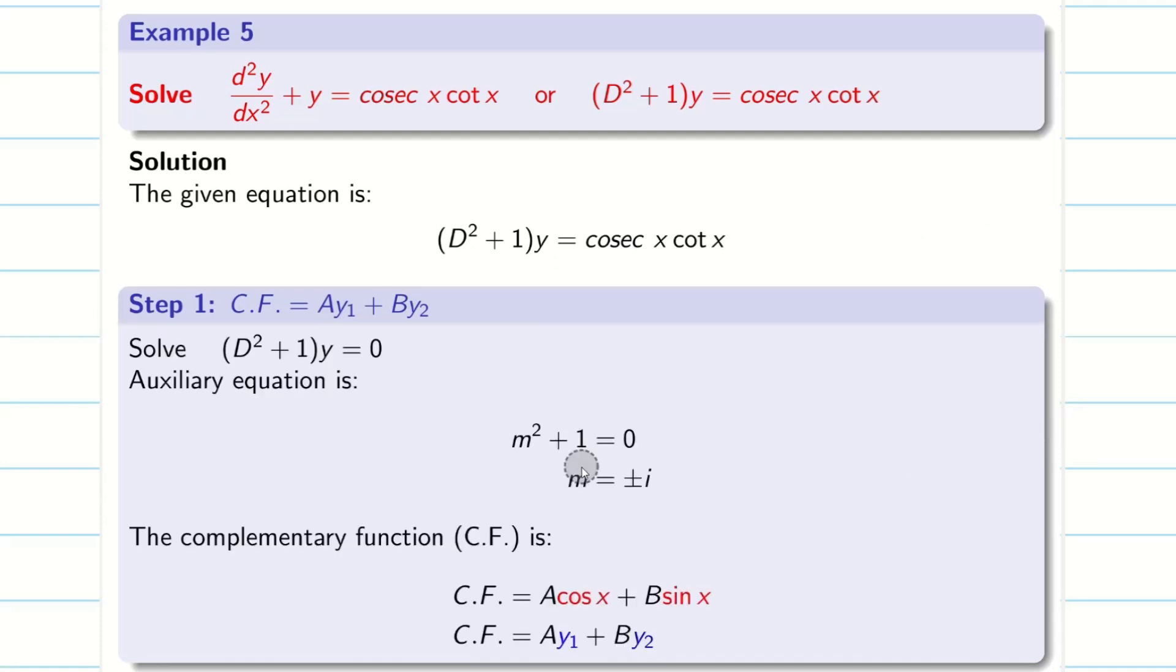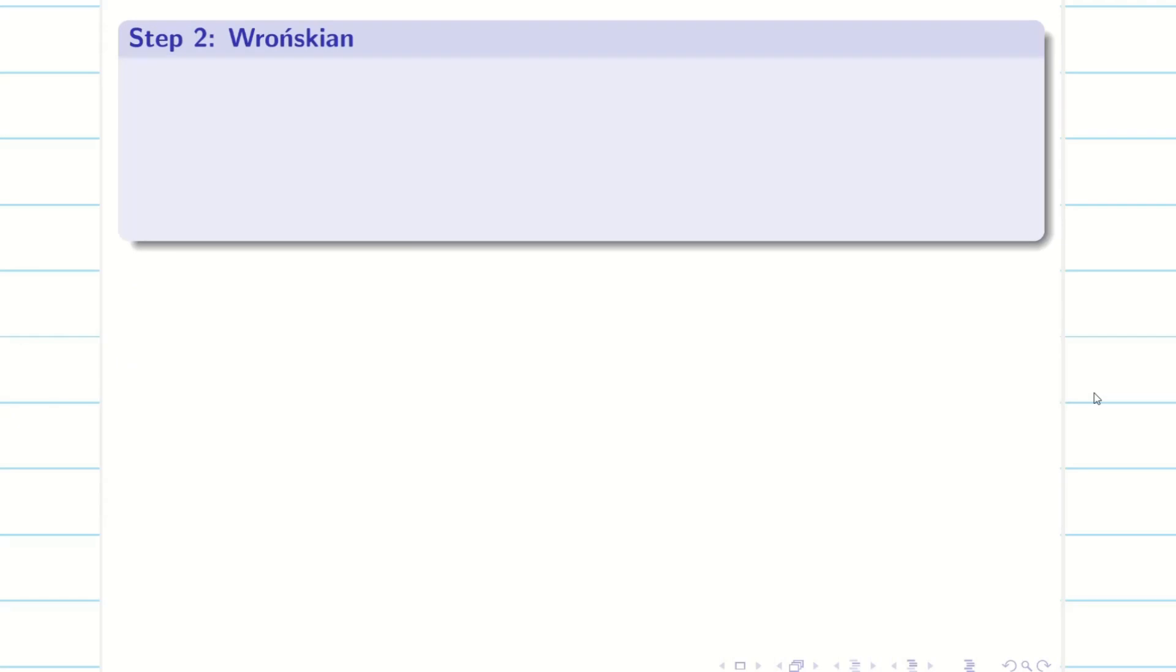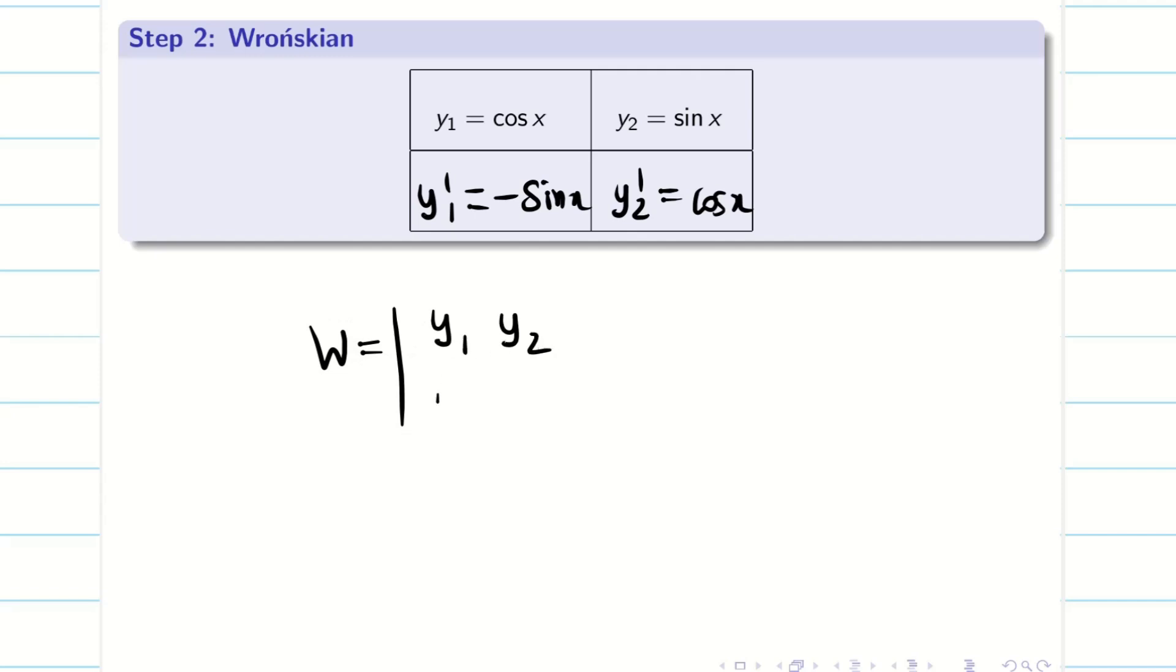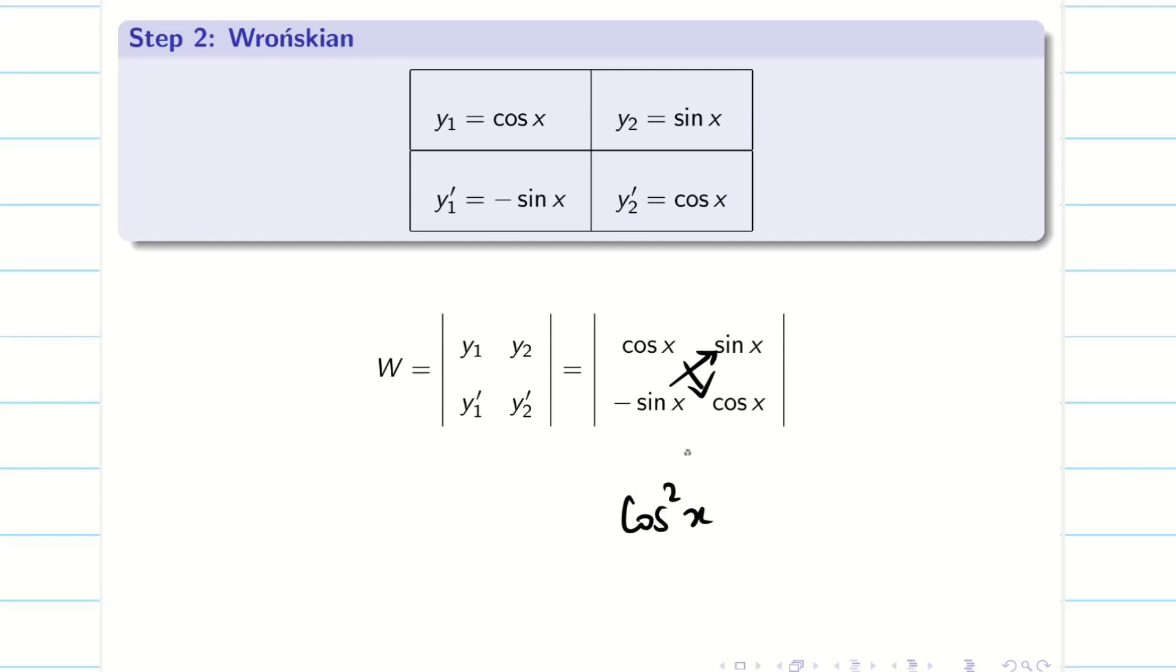So step 1 is finding CF. We found that y₁ is cos x and y₂ is sin x. Therefore step 2 is finding Wronskian. y₁ is cos x, y₂ is sin x, y₁' is -sin x, y₂' is cos x. Now we have to find the Wronskian. When I substitute this in the determinant, expanding we get cos x into cos x minus minus of sin x into sin x. So cos² x + sin² x = 1. Therefore W = 1.